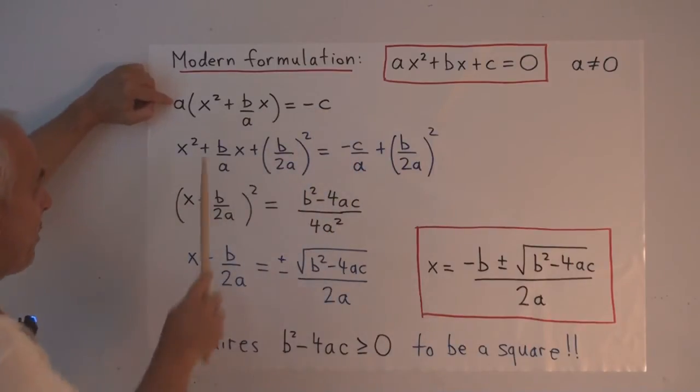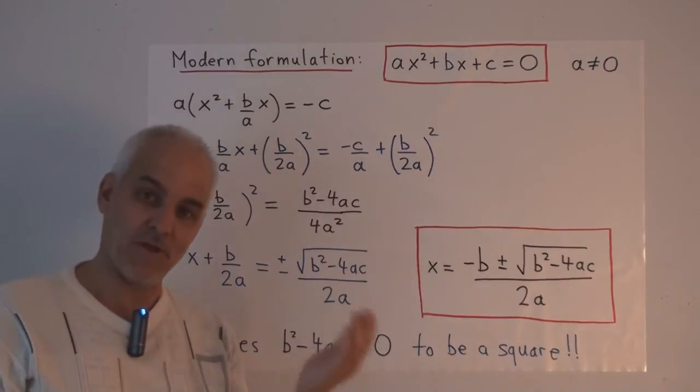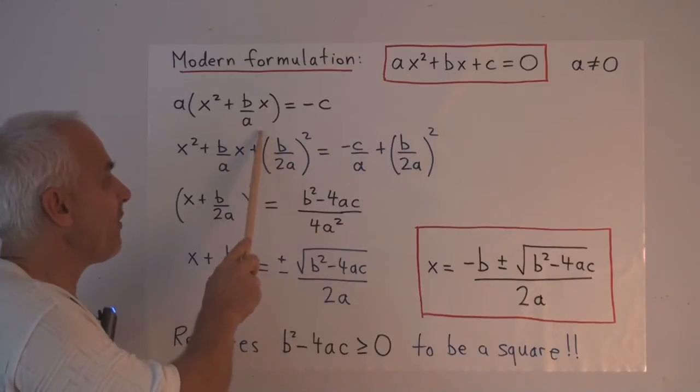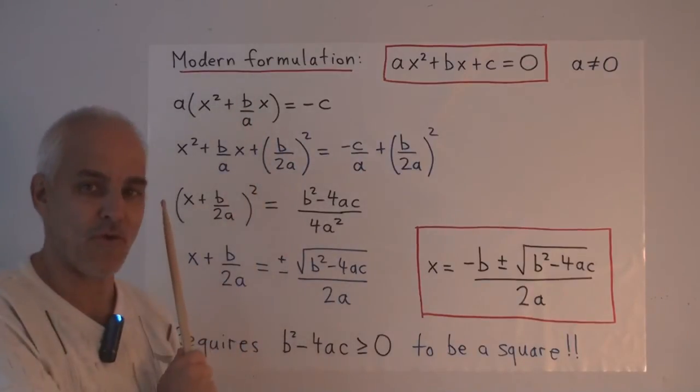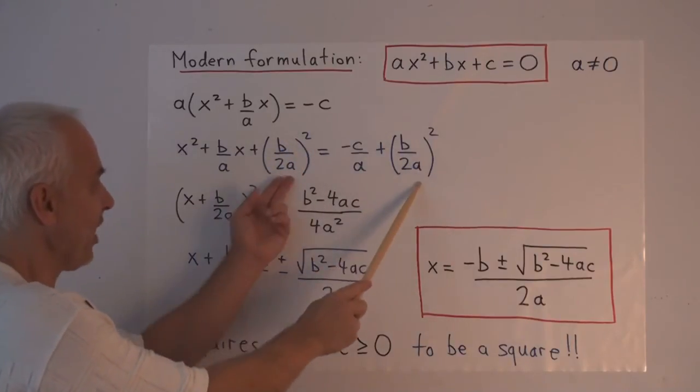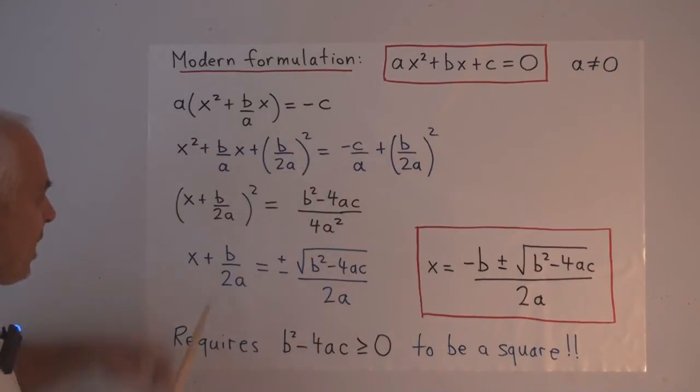And what's inside here now, we complete the square in exactly the same way as we did on the previous slide. We do that by adding the square of half of this coefficient, b over 2a. So we add the square of that to both sides so that it's still a valid equation. That makes what's on the left-hand side here a perfect square: x plus b over 2a all squared.